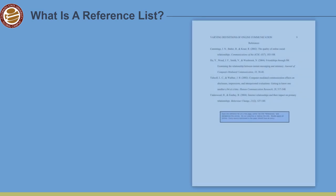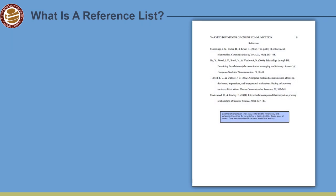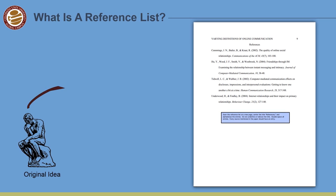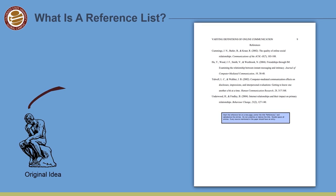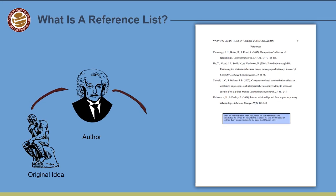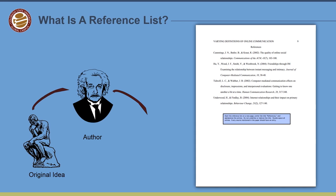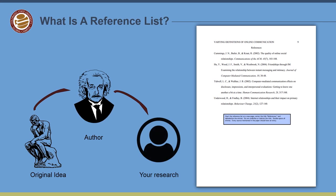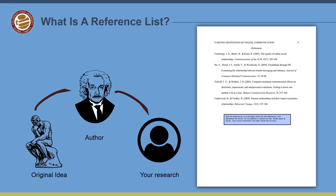A reference list appears at the end of an article or essay and provides documentation for each source cited in the work. This allows readers to locate a specific work and enters your work into the body of scholarly discourse. This tutorial will show you how to generate and format your APA reference list for a variety of material types.